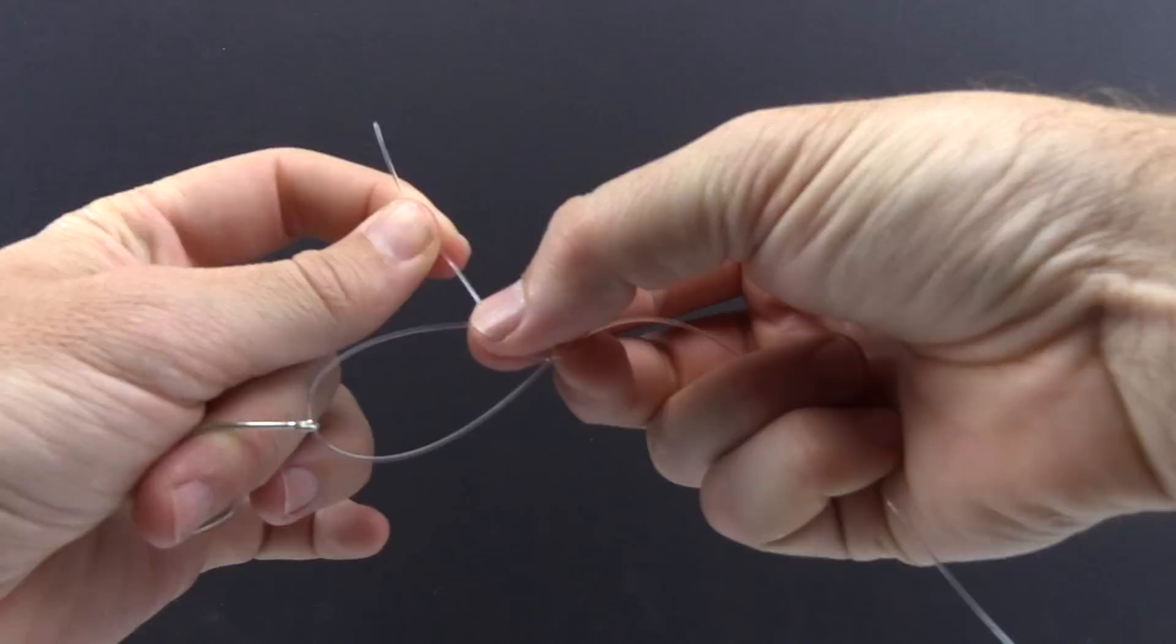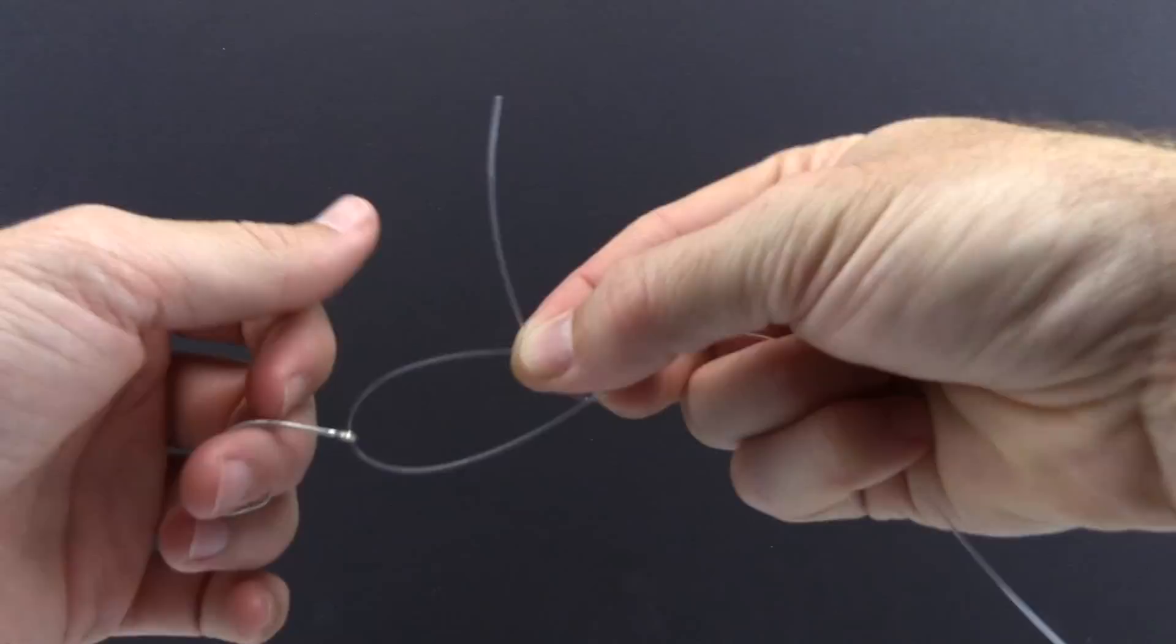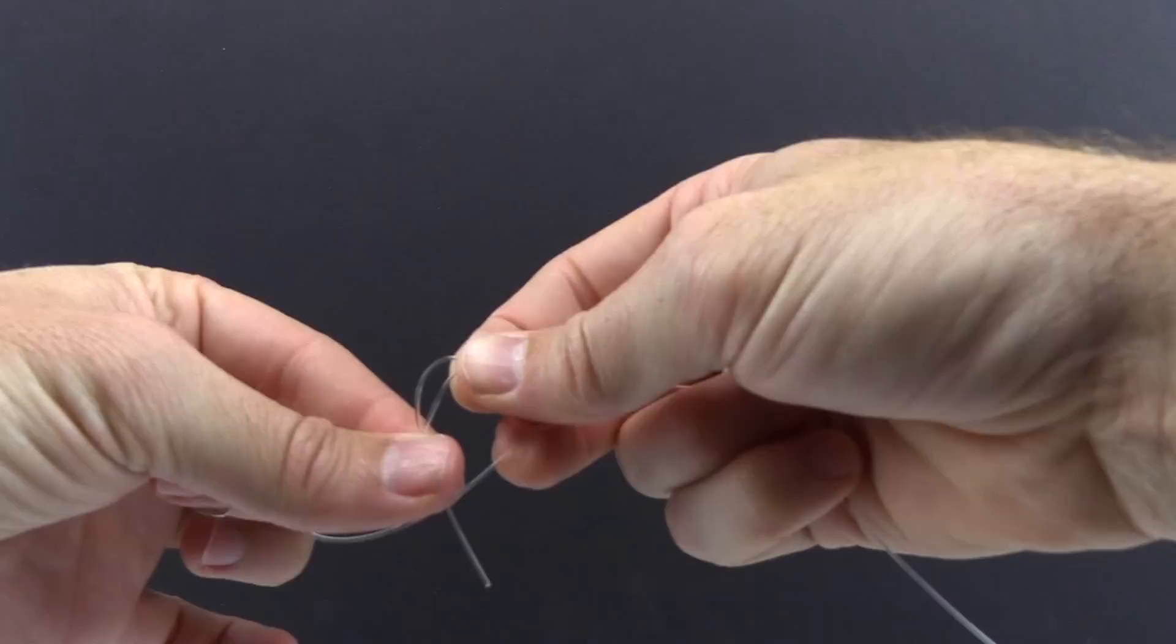So this is really a hitch knot and I'm just going to go ahead and hold that with my right hand. We have the tag end sticking up and we still have this main loop that we created and we're going to do the same thing.